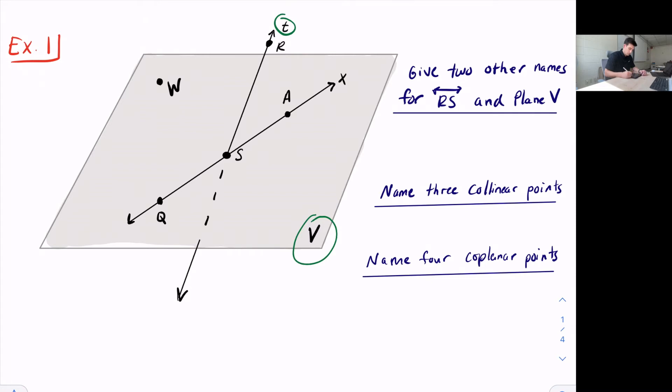So over here we have some questions on the right. It says, give two other names for Line RS and Plane V. So Line RS we see is right here. So Line RS, we could just switch those letters and we could say it's Line SR. Or we could call it Line T.